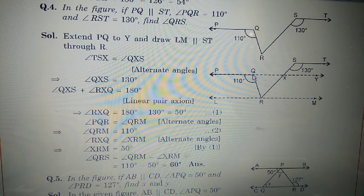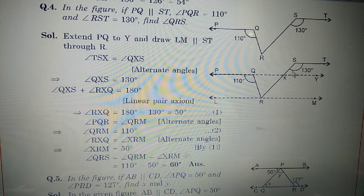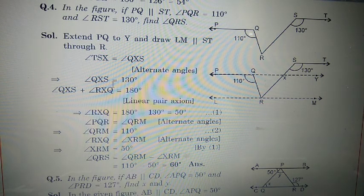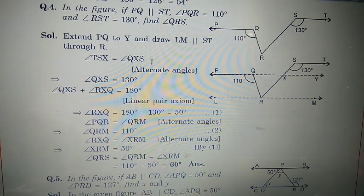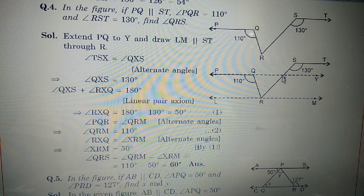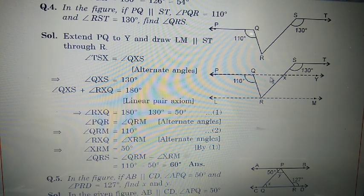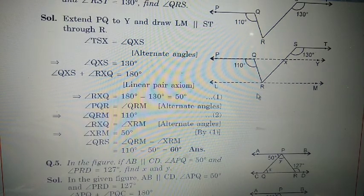Angle TSX and angle QSX — these are alternate interior angles, so angle QSX equals 130 degrees. After that, angle QXS and angle QXR form a linear pair, so their sum is 180 degrees. This gives angle QXR equal to 50 degrees. So this angle is 130 and this one is 50 degrees.